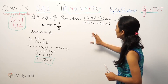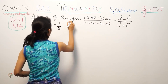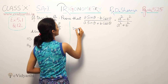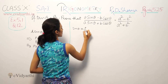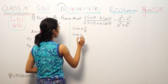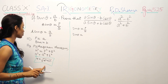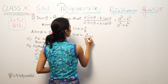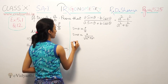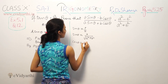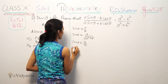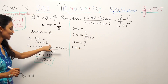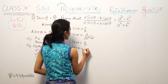Now we have the values of sin theta and cos theta. Sin theta is equal to perpendicular over hypotenuse, which is a upon under root of a square plus b square. Cos theta is base over hypotenuse, which is b upon under root of a square plus b square.